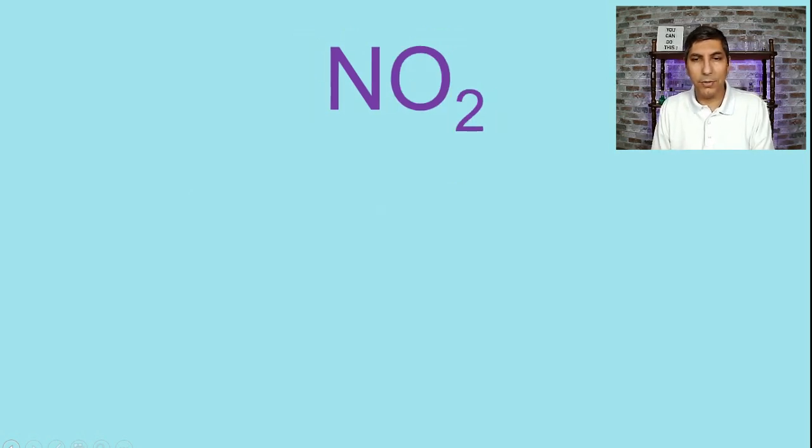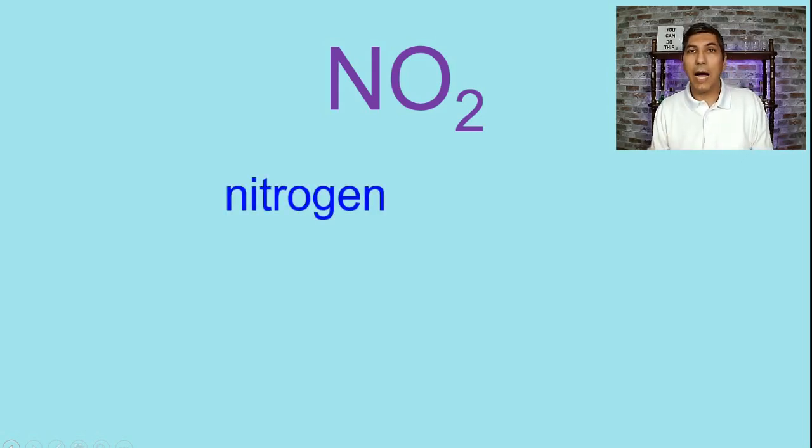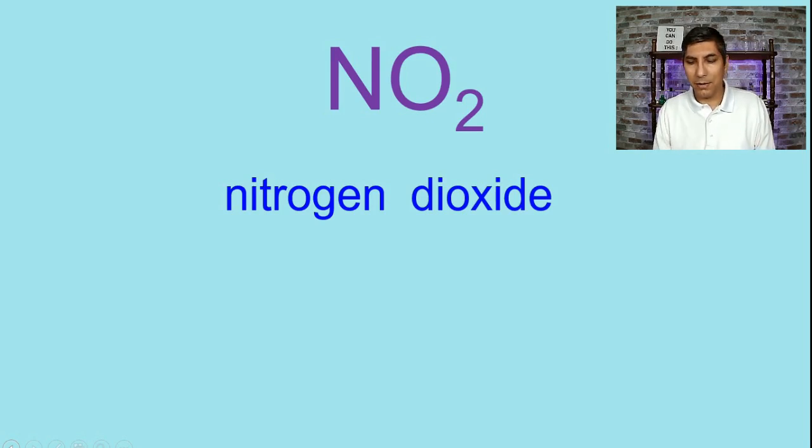If we look at the next compound here, NO2. Now N is nitrogen. We don't start with mono. Nitrogen is just nitrogen. And then two is di. And we have two oxygen. So it becomes dioxide. So nitrogen dioxide for this compound right here.